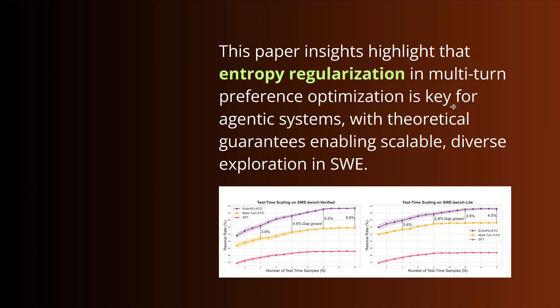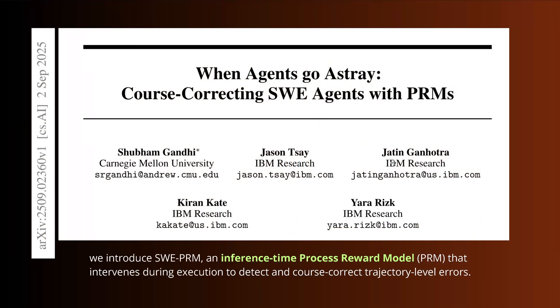So what is the summary? Easy, no? That was simple. Paper highlights that the entropy regularization in multi-turn preference optimization is key for our agentic system. We looked today in this video at agentic systems for coding with, if you want, theoretical guarantees, enabling scalable test time compute, diverse exploration in software engineering. Great. And you know what? The beauty of this idea, since it is also applicable to mathematics, to theoretical physics, or any other science experiment. This is nice to explore this idea, not just for coding, but also for reasoning complexities, for visual complexities, for example.